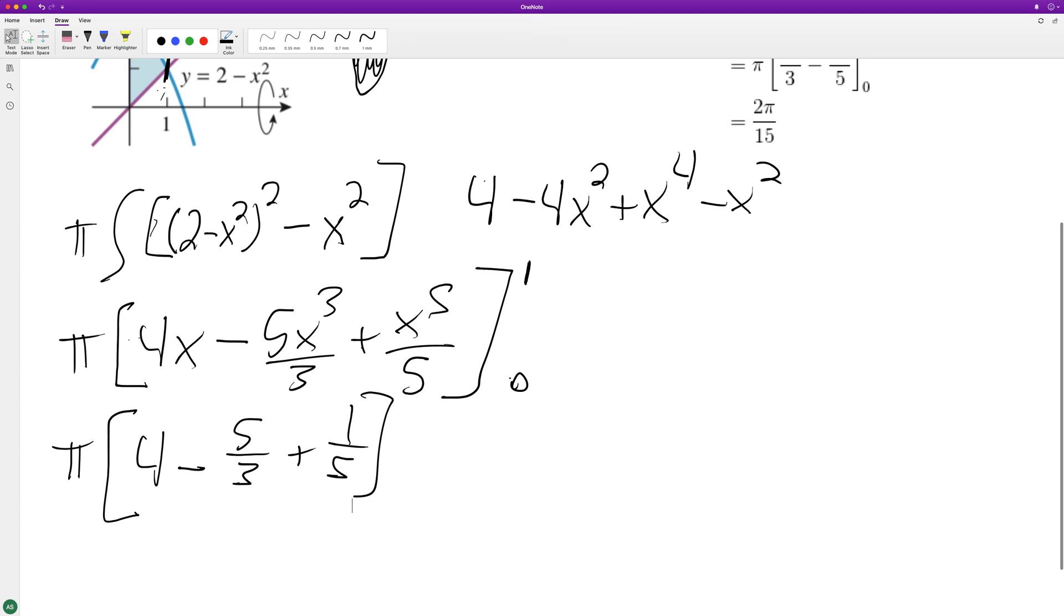And when we do that, so I need a common denominator here. So it looks like 15, so 60 over 15 minus 25 over 15 plus 3 over 15. So I get 35 plus 3, it's 38 over 15 times pi.